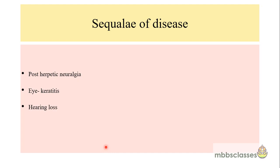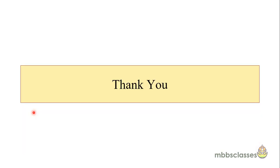There are certain sequelae of the disease. The most important is post-herpetic neuralgia — neuralgic pain in the area of distribution of the involved facial nerve — which may persist for months even after resolution of the disease and recovery of the facial palsy. Another complication is development of keratitis due to inability to close the eye, and persistent permanent sensorineural hearing loss. With this I come to an end of this video. Thank you for watching.